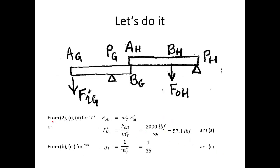From equation 2 applied to the compound lever, the output force at H equals the total theoretical mechanical advantage times the lossless input force at G. Solving for FIG star: 2,000 pounds divided by the total mechanical advantage of 35 gives 57.1 pound-force. That answers part A — what downward force at A of lever G, neglecting friction, will lift the 2,000 pound load.